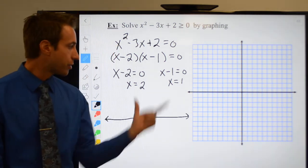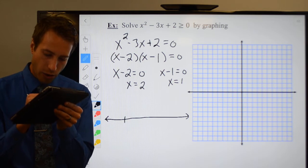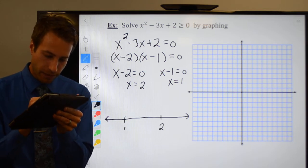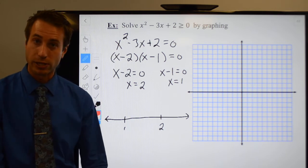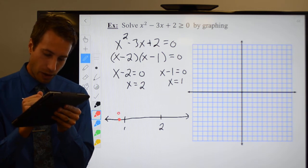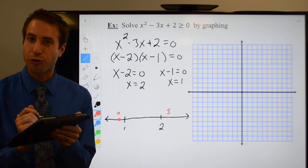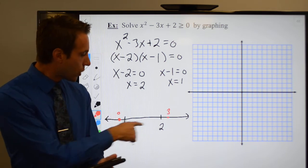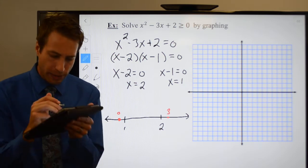I'm going to put the solutions I found on my number line. How about we put 1 over here and 2 over here. Then all I need to do is pick some test points. Something less than 1 that's easy—how about 0? Something greater than 2 that's easy—how about 3? And something between 1 and 2, like 1 and a half, which would be 3 halves.